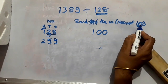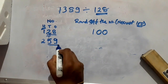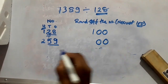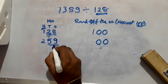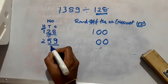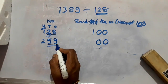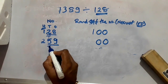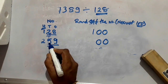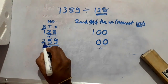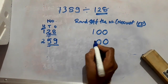Say you are given 259 and you have to round off to the nearest 100. Underline 2 digits and write two zeros. Check the digit at the higher place among those underlined — here it is 5, and the condition is satisfied. So 2 becomes 2 plus 1, that is 3. So 259 rounded to the nearest 100 is 300.